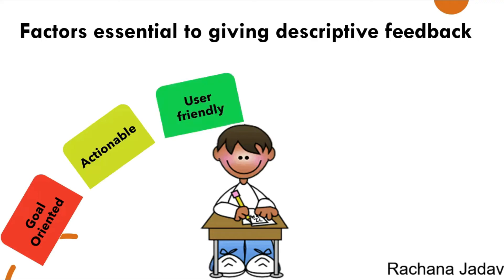Next is user-friendly — the student must be able to understand it. It is supposed to help achieve the learning aim or ambition. For example, if a student wants to go into the science stream, counselors have to give counseling according to that goal — which subjects, how to prepare — so it is focused on what the learner wants to achieve.